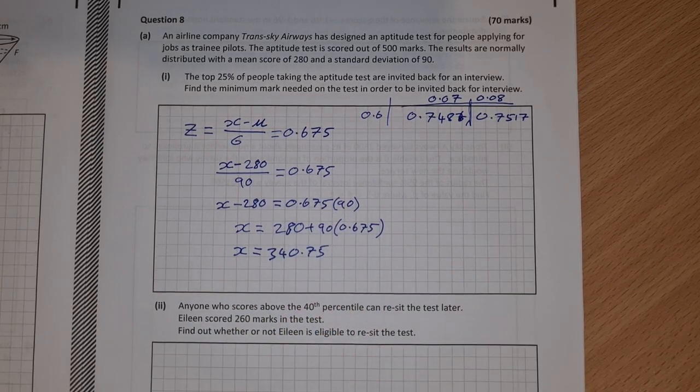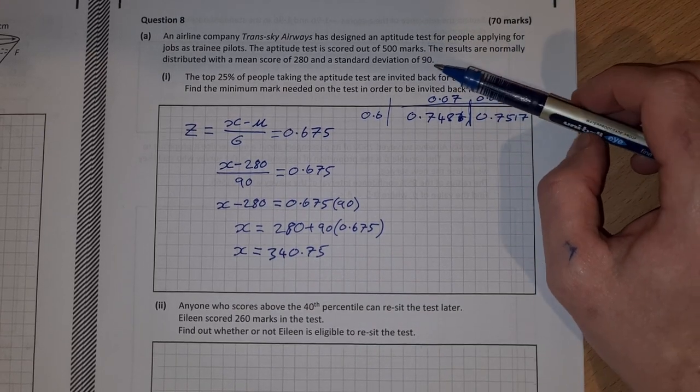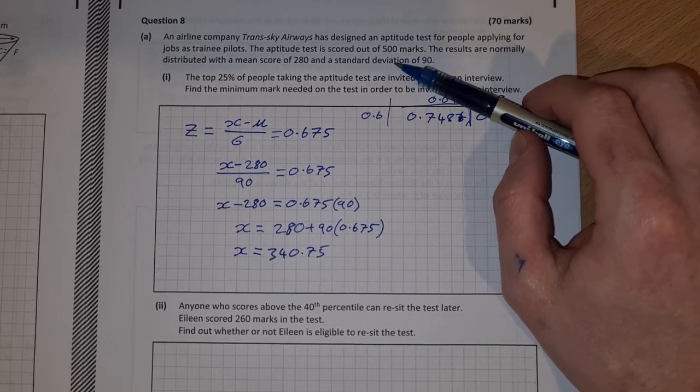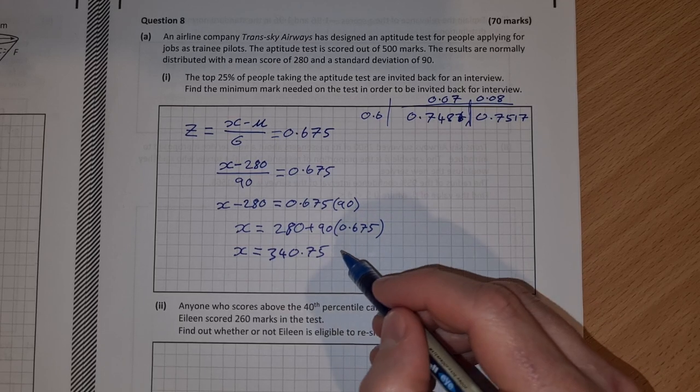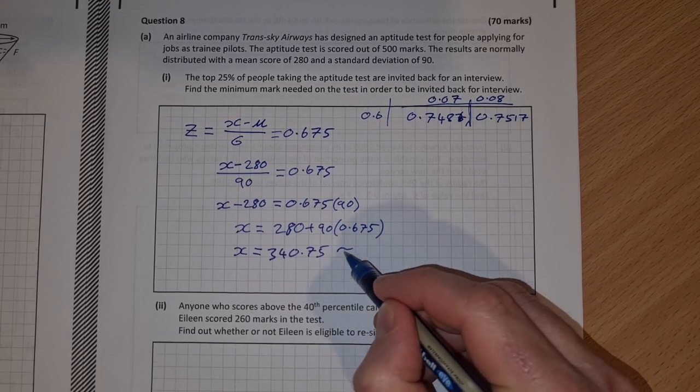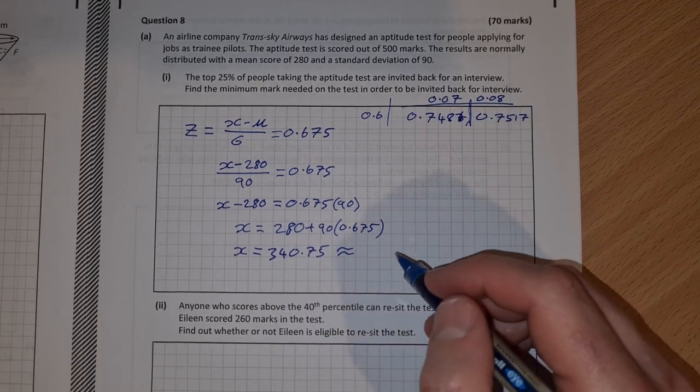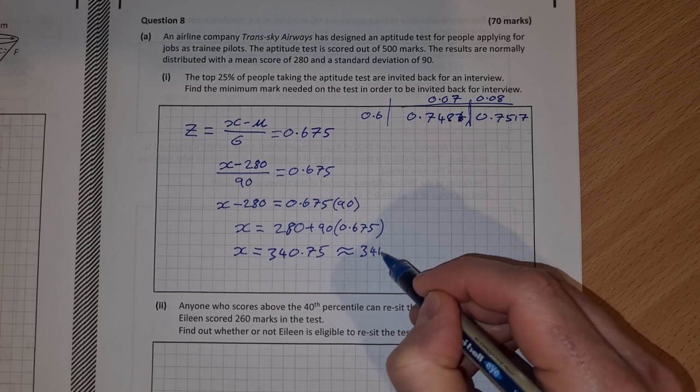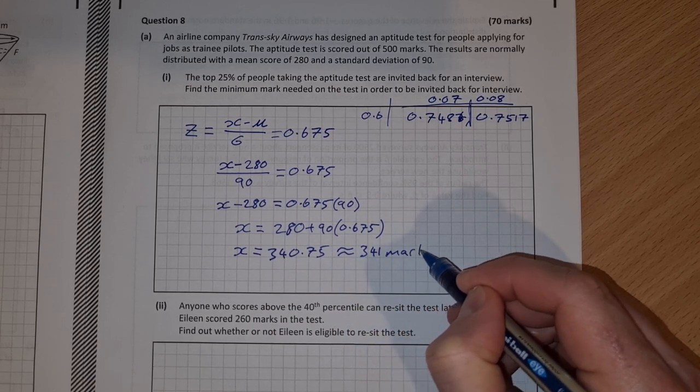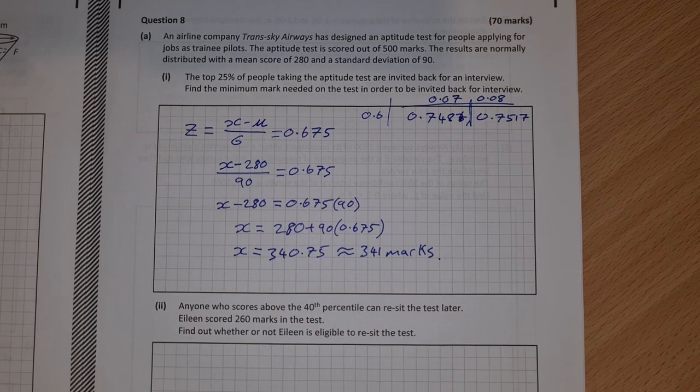If we change that into marks, it doesn't say that it has to be an integer number of marks, but I would imagine that is to be rounded to the nearest whole number. So 341 marks is how many marks are needed.